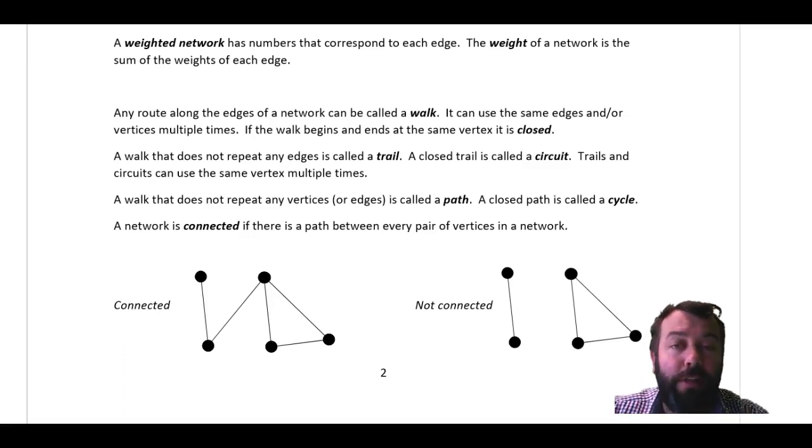Now, trails and circuits, they can use the same vertex a number of times, they just can't reuse the same edge. A walk that doesn't repeat any vertices, and that means it can't repeat any edges either. If I have a walk that never goes to the same vertex twice, that's called a path. And if my path takes me back to where I started from, it's called a cycle.